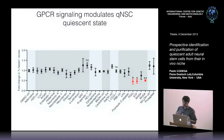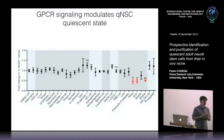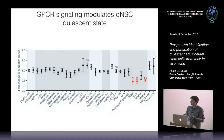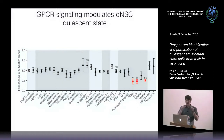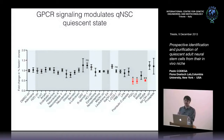There is emerging literature suggesting that quiescent stem cells are not simply dormant cells waiting to be awakened by a signal, but that the quiescent state is actually actively maintained by continuous signaling that keeps the cells quiescent.